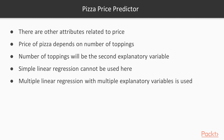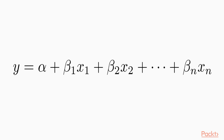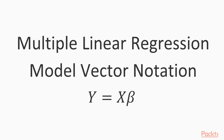We cannot proceed with simple linear regression, but we can use a generalisation of simple linear regression that can use multiple explanatory variables, called multiple linear regression. Multiple linear regression is given by this model. Whereas simple linear regression uses a single explanatory variable with a single coefficient, multiple linear regression uses a coefficient for each of an arbitrary number of explanatory variables.